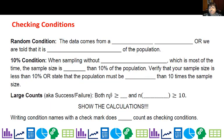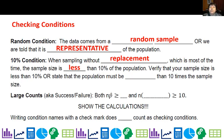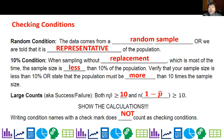Which conditions do we need to check? First, the random condition: the data comes from a random sample, or if it's representative, that's good enough because the whole point of randomizing is to get a representative sample. Second, the ten percent condition: if we're sampling without replacement, the sample size needs to be less than ten percent of the population. Third, the large counts condition: NP must be greater than ten — your expected number of successes — and your expected number of failures must also be greater than or equal to ten. Show your calculations or you won't get credit for checking the conditions. Writing conditions with a checkmark does not count as checking conditions.